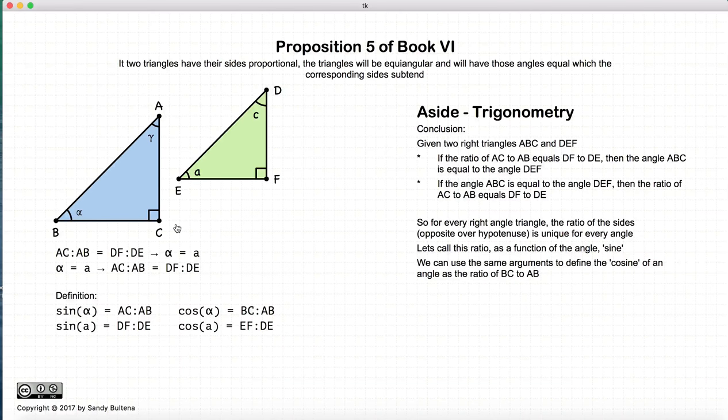We could follow all the same logic and show that the ratio of what's called the adjacent, or BC to AB, and EF to ED, have the same properties of sine in that they are unique for each angle. So we can give them a unique name, and we can call it cosine.